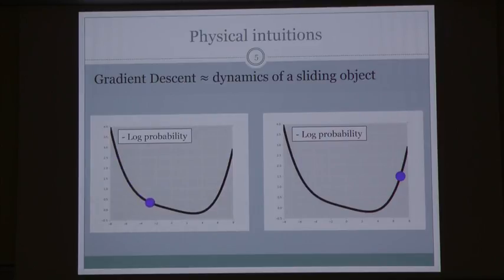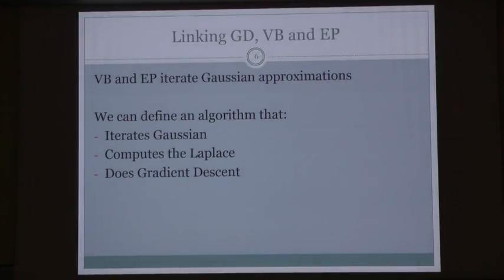In this example you've got the little blue dot sliding from the left-hand side and from the right-hand side. Now what I want to do is link gradient descent to variational Bayes and expectation propagation.